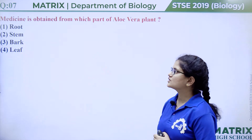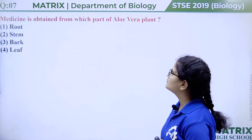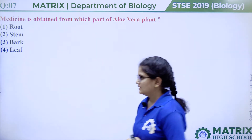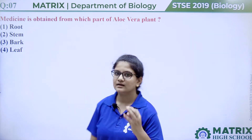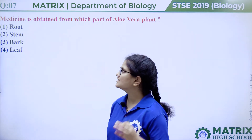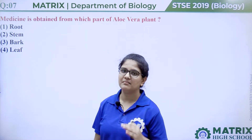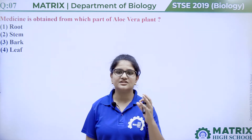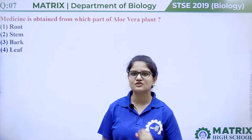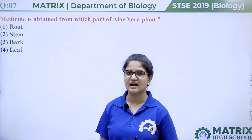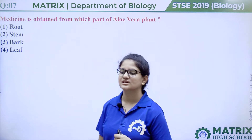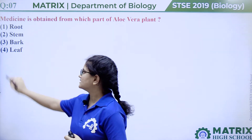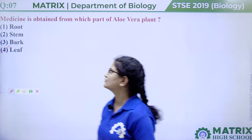Question number seven: medicine is obtained from which part of the aloe vera plant? Options are root, stem, bark, or leaf. The gel obtained from the leaves of the aloe vera plant is used in medicines. So the answer is option four, leaf.